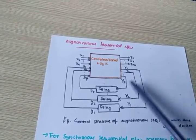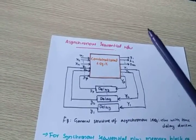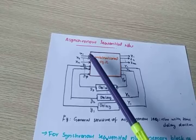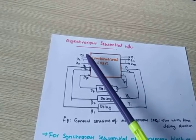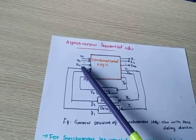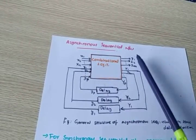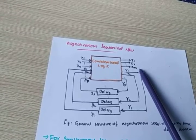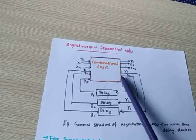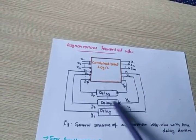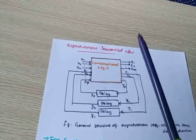This is the structure of Asynchronous Sequential Network. x1, x2, ..., xn are the input variables. z1, z2, ..., zm are the output variables. And we take a feedback path through a delay element.